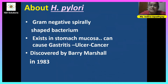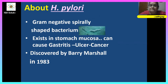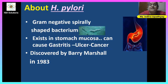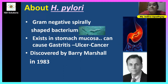About H. pylori: it is a gram-negative, spirally shaped bacterium. It exists in the stomach mucosa. It can cause gastritis, which can lead to ulcers, and in very few cases it can turn into cancer, which is more serious. It was discovered by Dr. Barry Marshall in 1983.